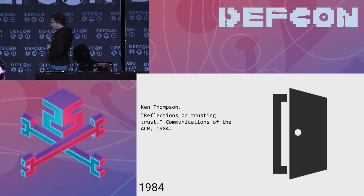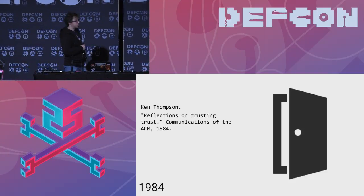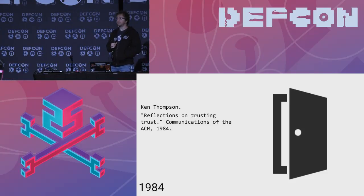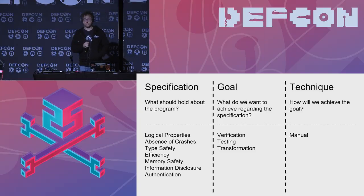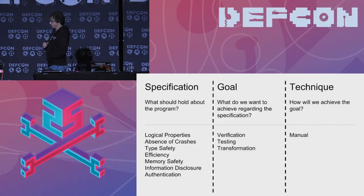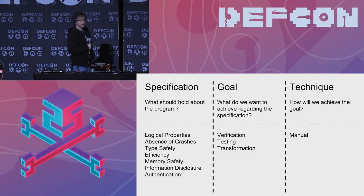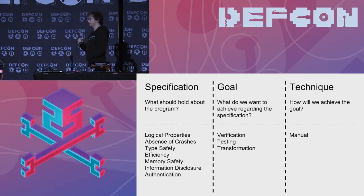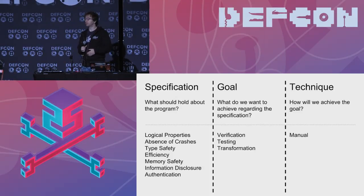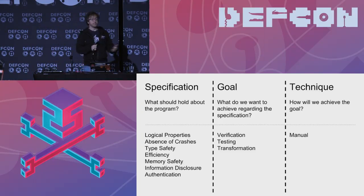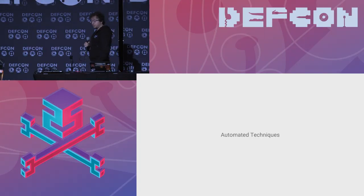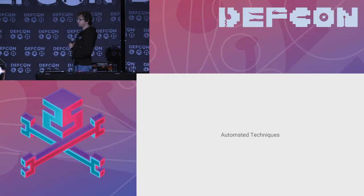A little while later, there was Ken Thompson's 'Reflecting on Trusting Trust,' where he reasoned that you could build a backdoor into a compiler that could build backdoors into sensitive code. Suddenly we have two more things to worry about in terms of specifications: memory safety, information disclosure, and authentication. Now you might want to verify that a program doesn't have a backdoor, or verify that a program will not leak your sensitive private information — which is very relevant today with all of our phones having all of our information with very little control over it.